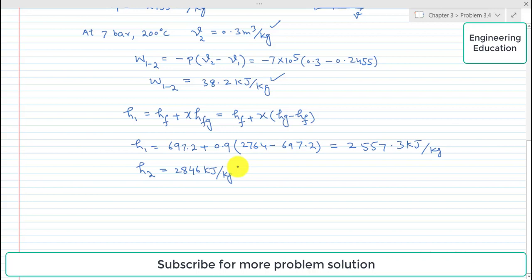So heat supplied can be found from the difference of these enthalpies, and it is h2 minus h1. So here, h2 is 2846 kilojoules per kilogram, while h1 is 2557.3 kilojoules per kilogram.